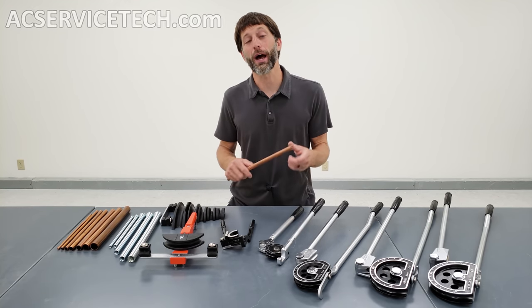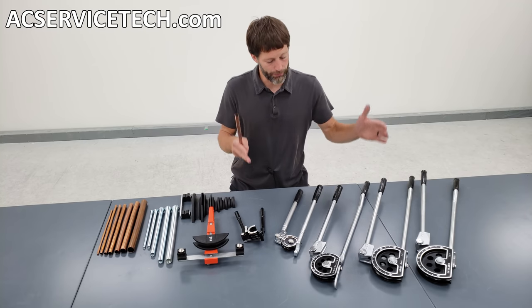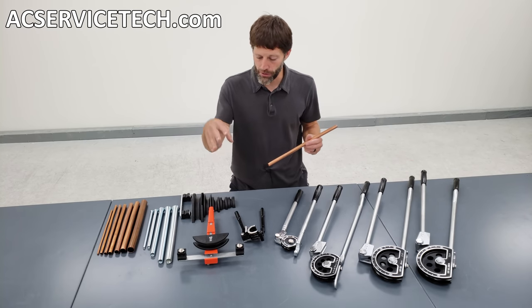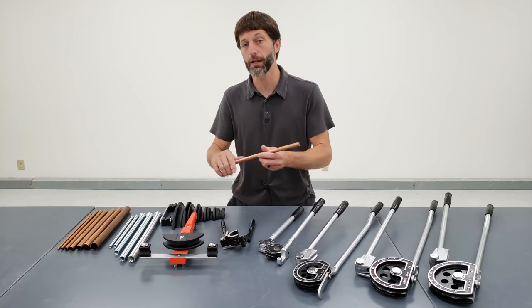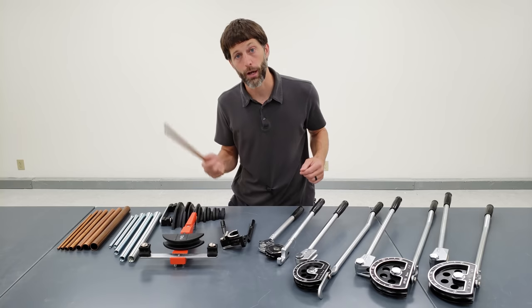In this HVACR training video, we're going over how to bend soft copper tubing to the proper measurements using lever type tubing benders, ratcheting tubing benders, spring benders, and also hand bending. We're going over up close shots of how to use each of these tools.